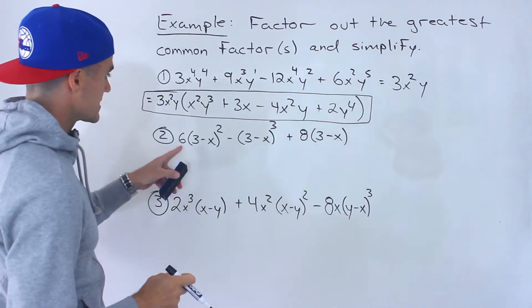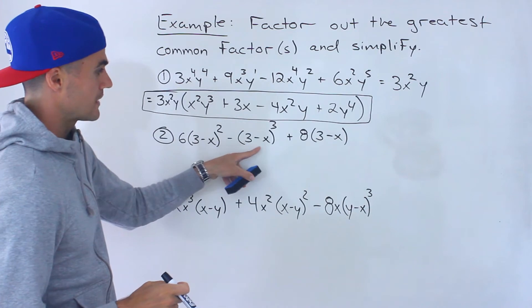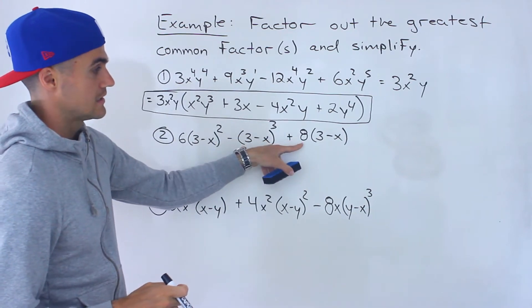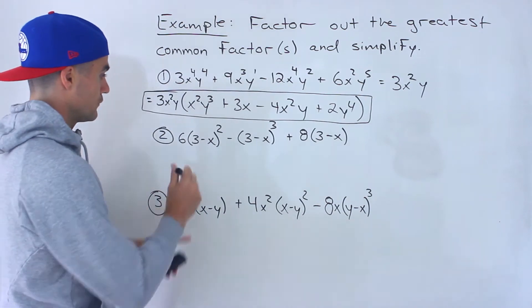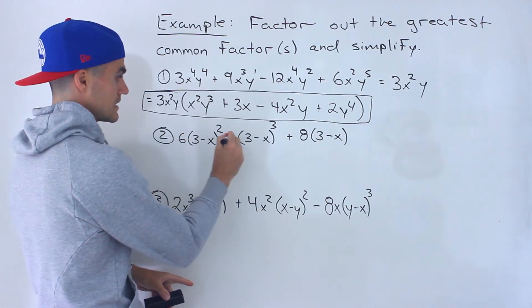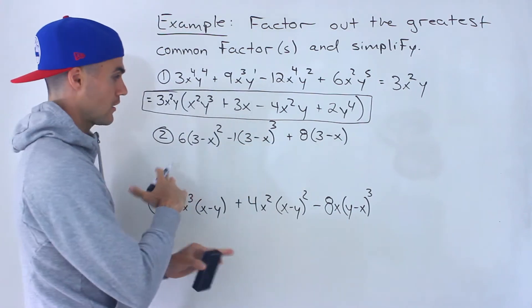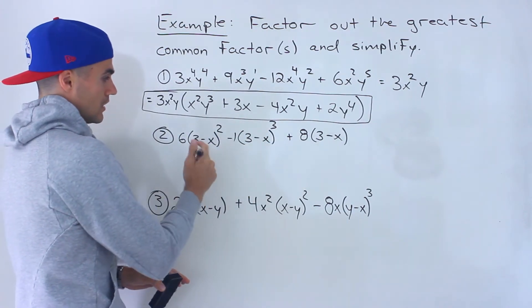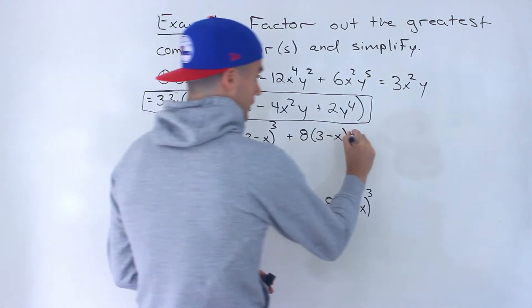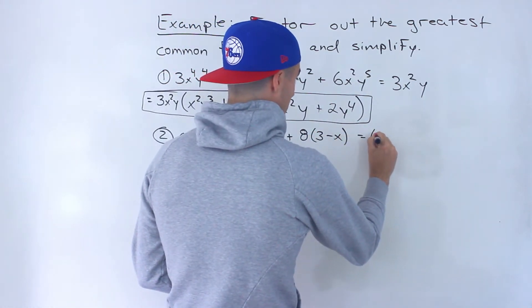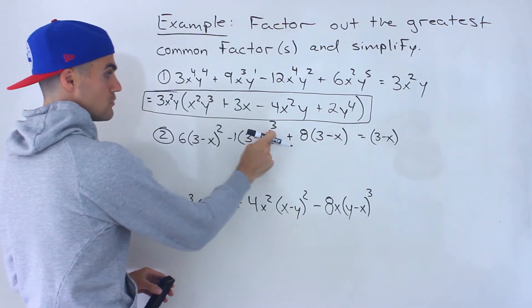Moving on to number 2, we've got 6(3−x)² minus (3−x)³ plus 8(3−x). With the coefficients, we have 6, negative 1, and 8 — there's nothing common to take out there. But notice that the bracket (3−x) is common in all of them. So we could take out (3−x) to the power of the lowest exponent. We have exponents 2, 3, and 1 — so we can only take out (3−x)¹.